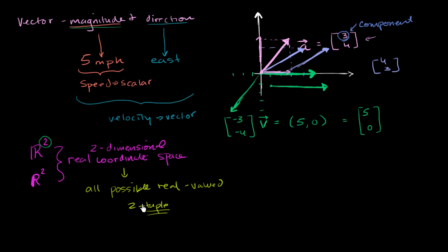So if you were to take all of the possible two-tuples, including the vector (0, 0), so it has no magnitude, and you could debate what its direction is right over there, you take all of those combined, and then you have created your two-dimensional real coordinate space. And that is referred to as R².